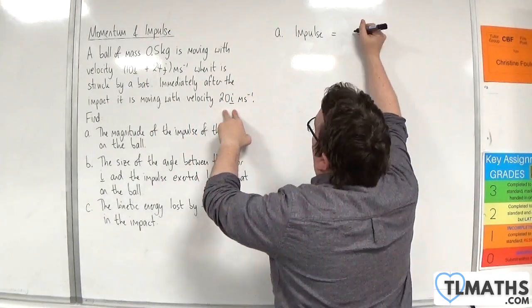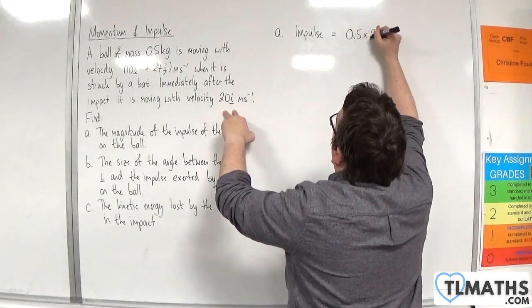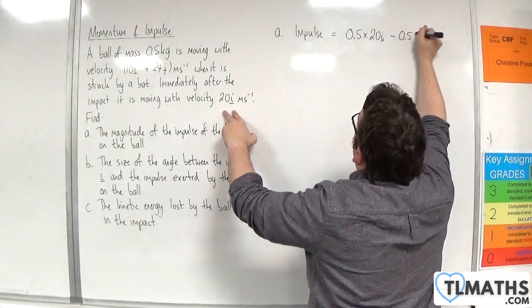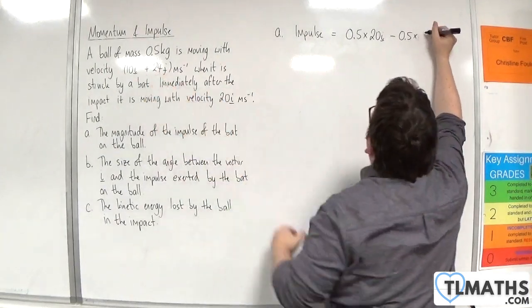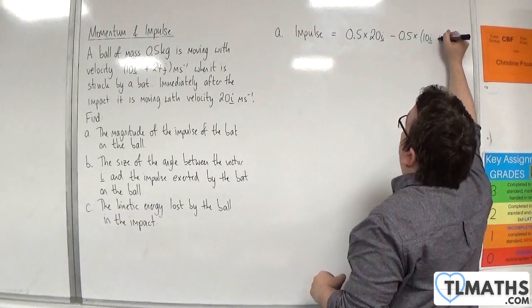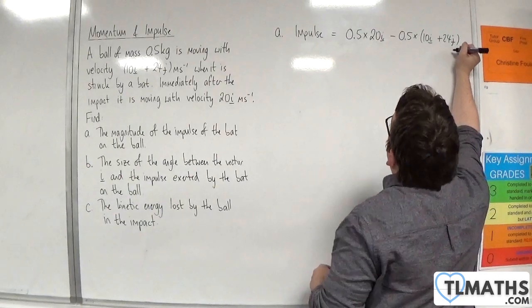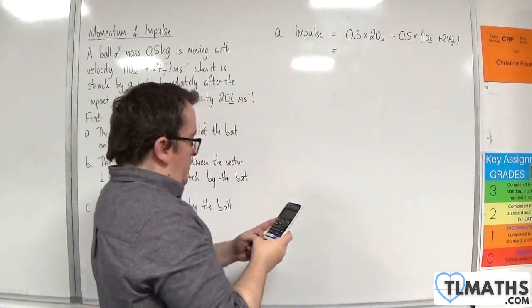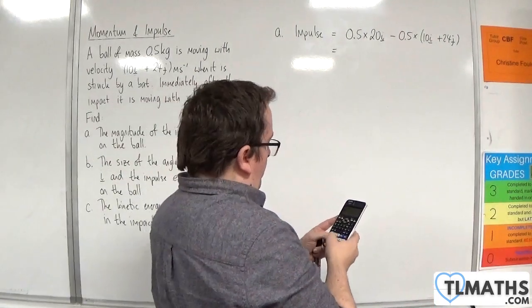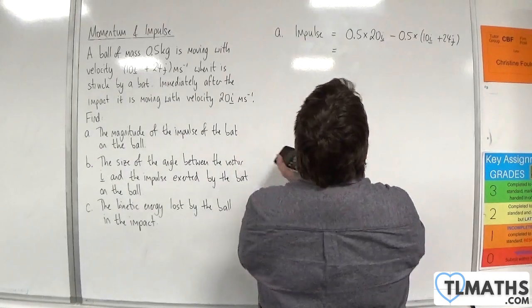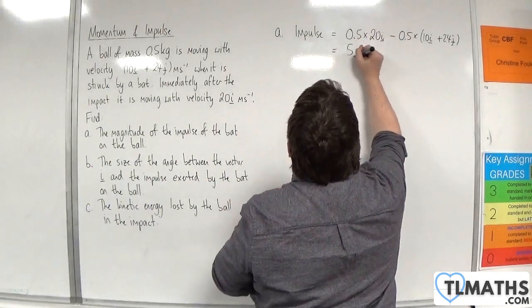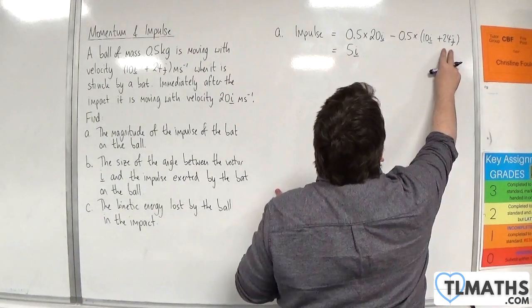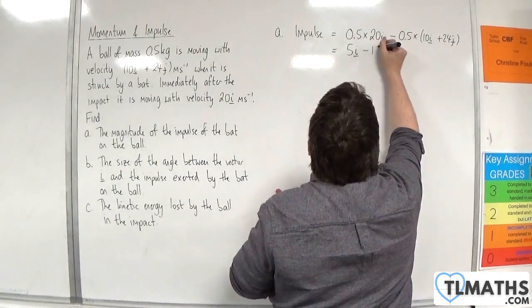So we have m times v, so 20i, then take away m times 10i plus 24j. Okay so we have 0.5 times 20 take away 0.5 times 10. Okay so 5i and then take away 0.5 times 24, so take away 12j.